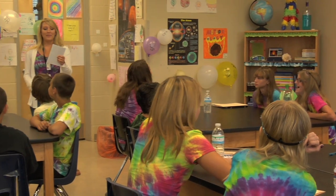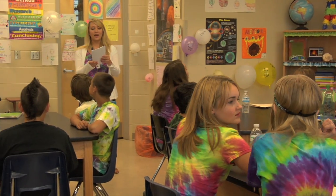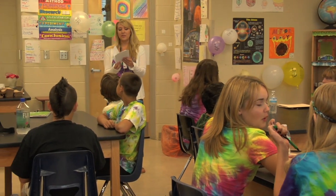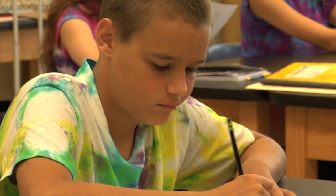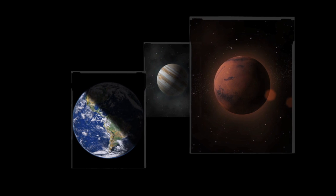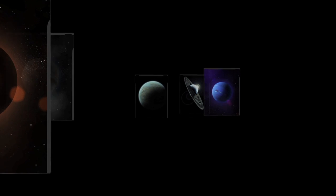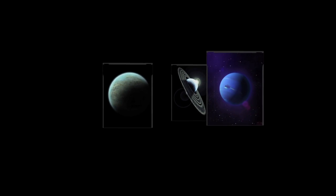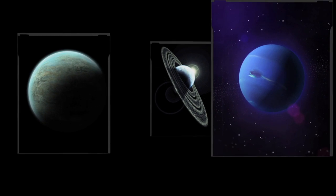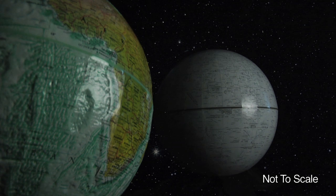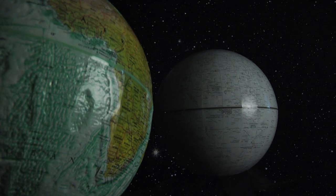We hope you enjoyed the phases of the Moon Lab. Let's take some time to go over the concepts that you learned. The sun illuminates half of all spherical celestial bodies, including the moon, at any given time. The phase of the moon depends on how much of the sunlit hemisphere is visible from Earth.